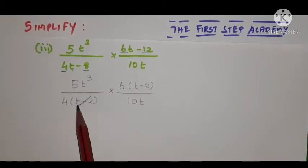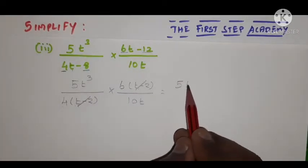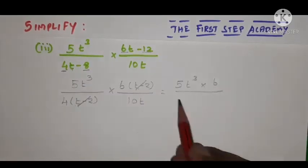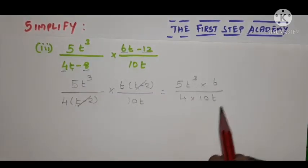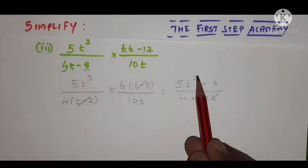Right, now look at this t minus 2—this t minus 2 will cancel. So further, the values are 5t³ times 6, divided by 4 times 10t. Now look at the variable: this t and t³ will cancel—t² remains. So we cancel the variables.